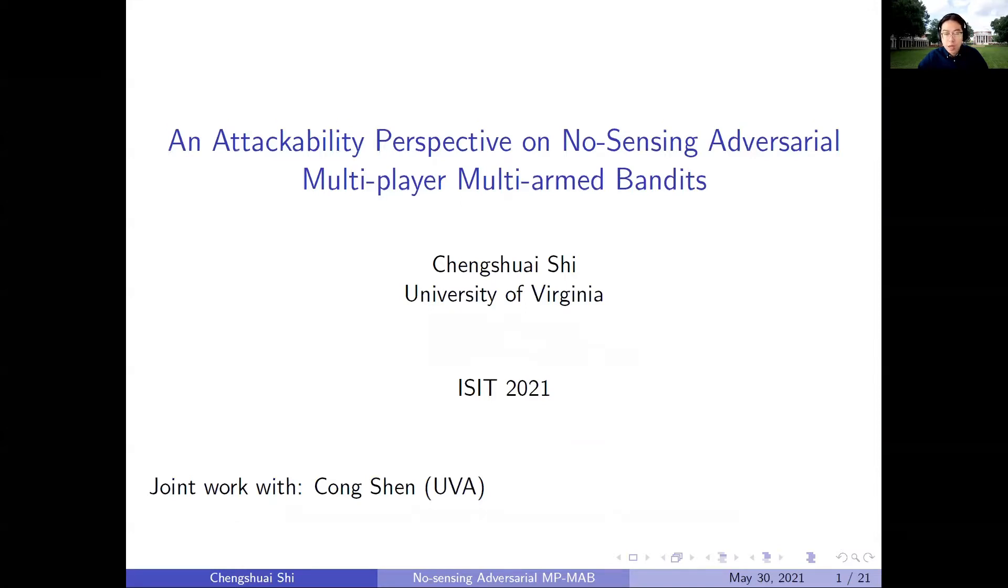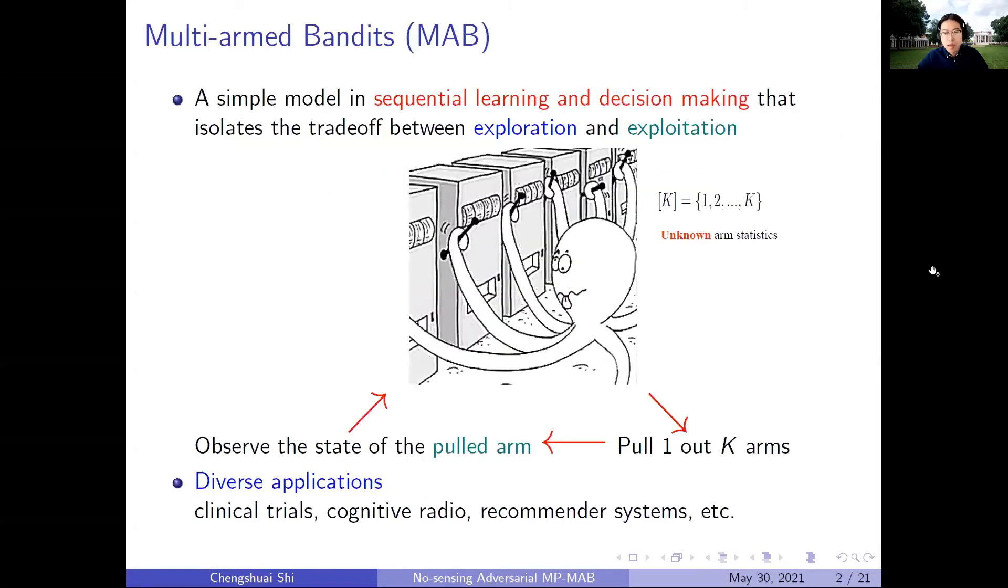Multi-armed bandits is a simple yet powerful model in sequential learning and decision-making. It captures the trade-off between exploration and exploitation. At each time slot, the player faces a set of actions, namely K arms, and she can pull one of these arms.